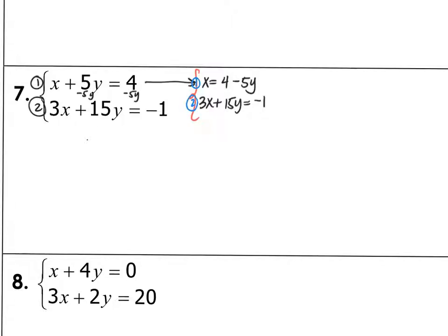So I can go ahead and replace this x with this value for x. So substitute x with 4 minus 5y as that is, hopefully, where these lines will intersect. We're going to check. They may not intersect, so we'll see. Plug this 4 minus 5y in for x. So 3 multiplied by 4 minus 5y plus 15y is equal to negative 1. Distribute 12 minus 15y plus 15y is equal to negative 1.